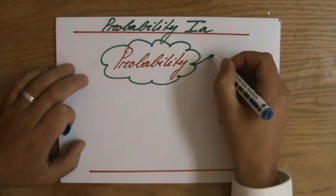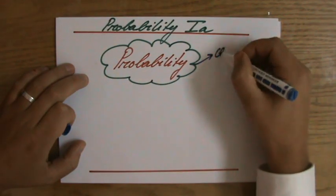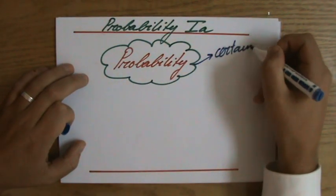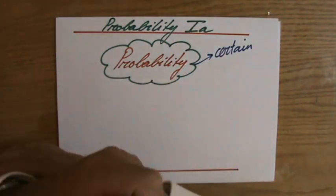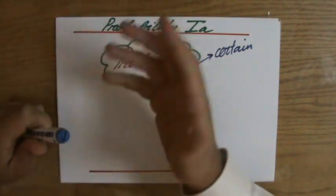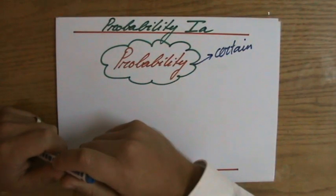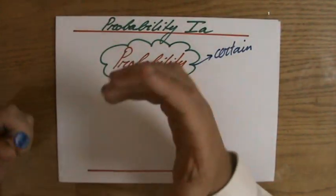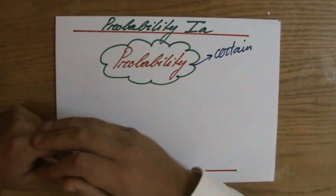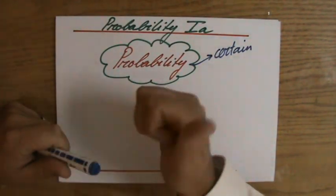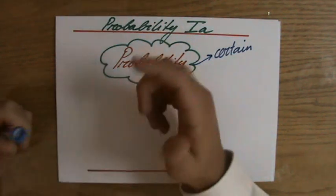For instance, you can find the term certain. Something happening is absolutely certain. Maybe you want to think of an example now. What is absolutely certain? Well, for instance, when you roll a dice, it's absolutely certain, a normal dice, that you're going to throw a number which is either 1, 2, 3, 4, 5, or 6. Absolutely certain.